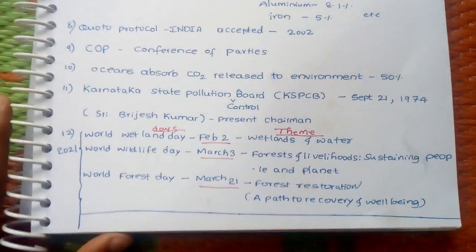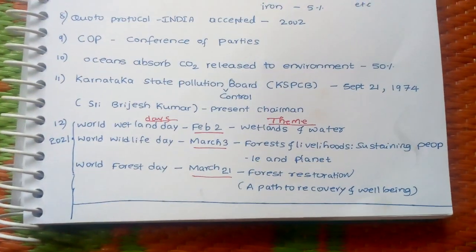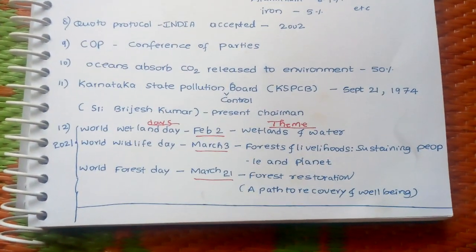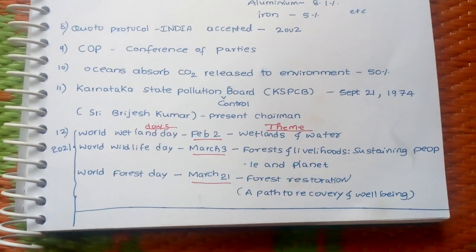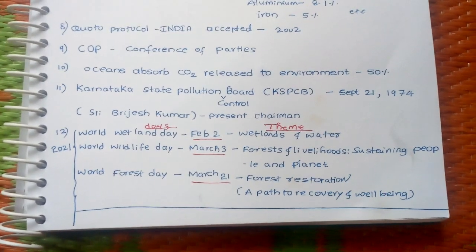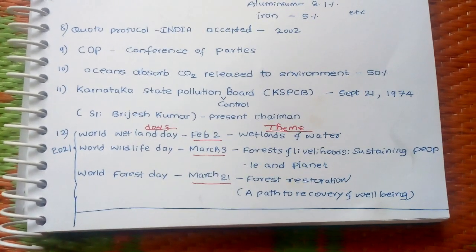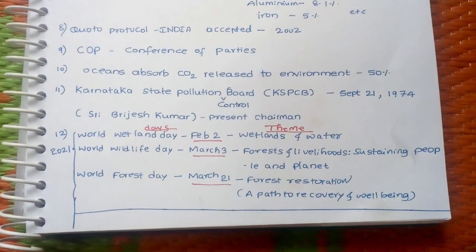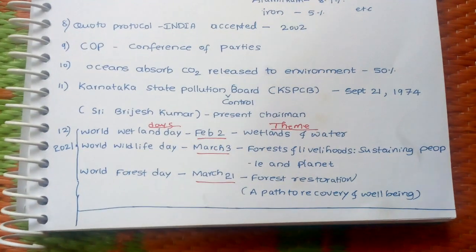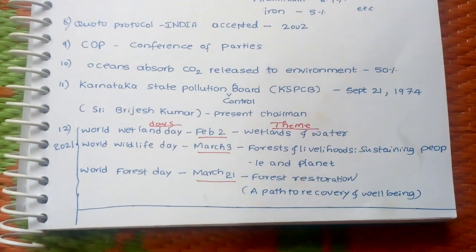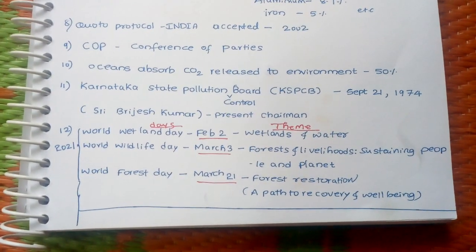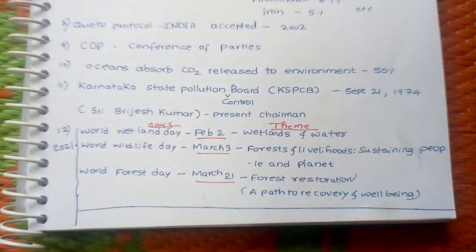The Karnataka State Pollution Control Board, KSPCB, was established on September 21, 1974. Currently, Sri Brijesh Kumar is the present Chairman of KSPCB.